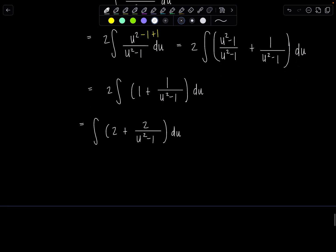So we have 2 plus 2 over u squared minus 1 du. And then just off to the side here, let's just find partial fraction decomposition for 2 over u squared minus 1. So that factors into u minus 1 and u plus 1. Those are both linear factors, so we'll just have constants in the numerator. A over u minus 1 plus B over u plus 1.